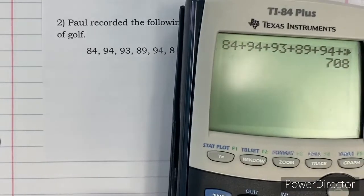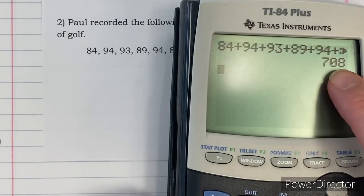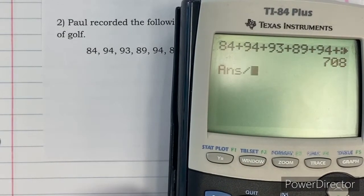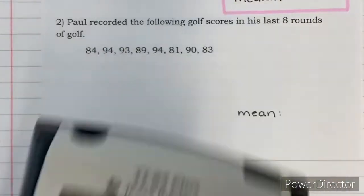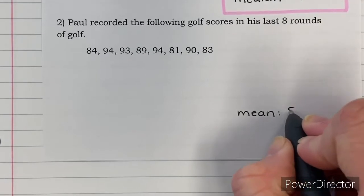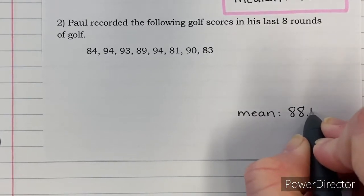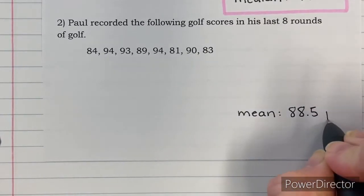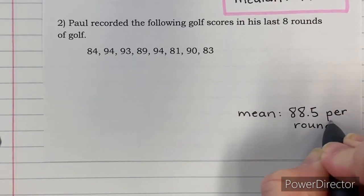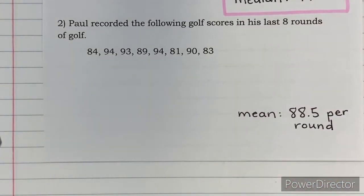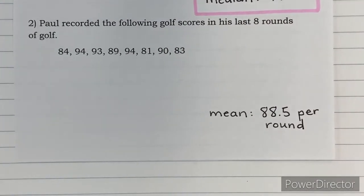So there are all of them typed in. He has 708. So now I'm just going to divide that score by eight to get his average. So 88.5. It's 88.5 per round. That's the average score that he's going to get for a round of golf.